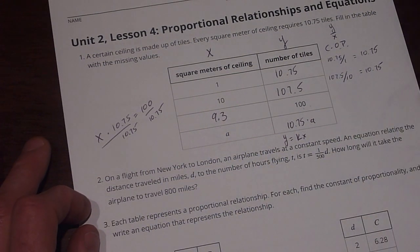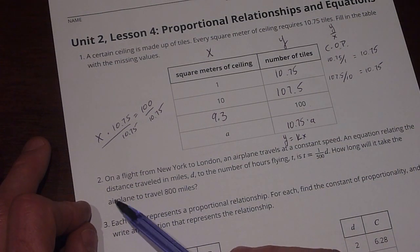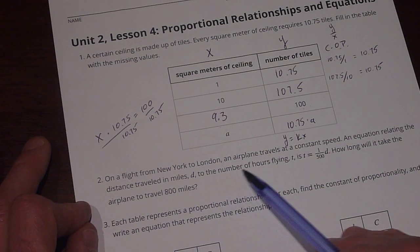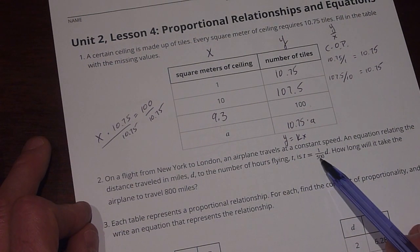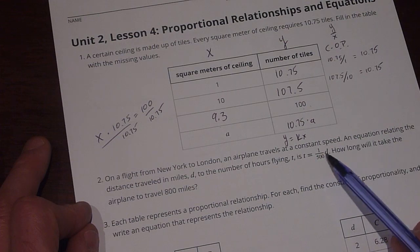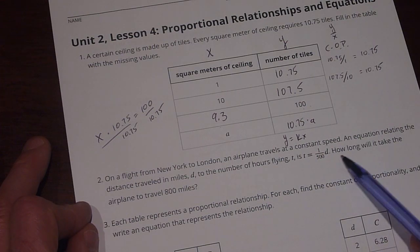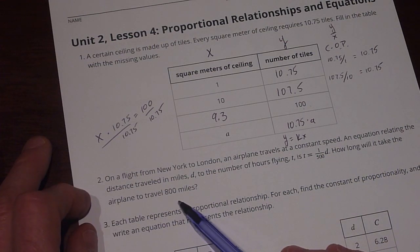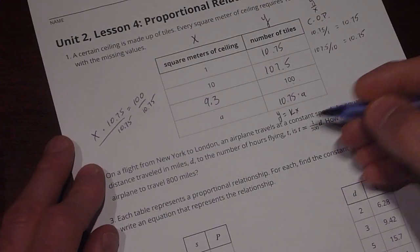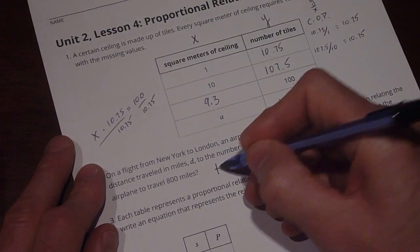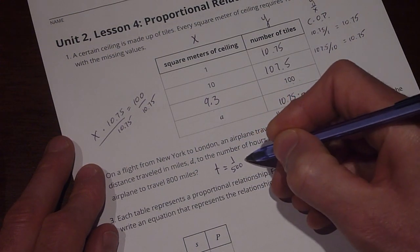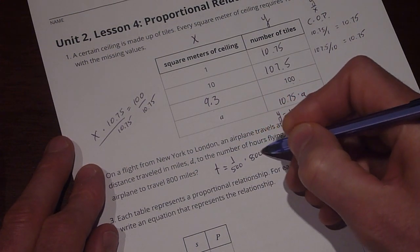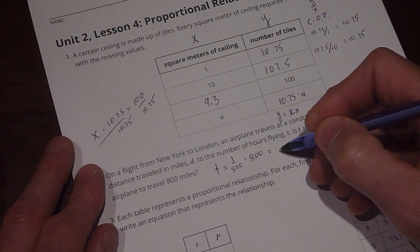Number two. On a flight from New York to London, an airplane travels at a constant speed. An equation relating the distance traveled in miles, D, to the number of hours flying, T, is T equals 1/500 times D. How long will it take the airplane to travel 800 miles? Well, since we're trying to find time, we set that equal to 1 over 500 times the distance, which is 800 miles, that's going to give us our answer.